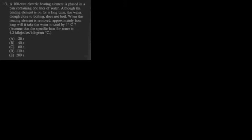Assume that the specific heat for water is 4.2 kilojoules per kilogram per degree Celsius. Our answers are 20, 40, 60, 130, and 200 seconds. Looking at the answers, I realize I cannot eliminate any of those answers. They are just numerics. They all have the same units, so I can't eliminate anything. I'm going to have to make a calculation and hopefully one of those answers match up to what I calculate at the end.